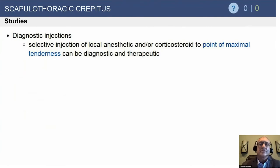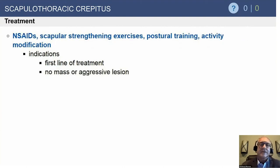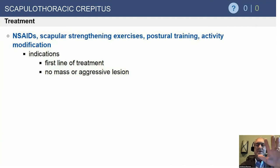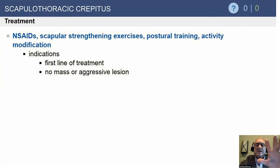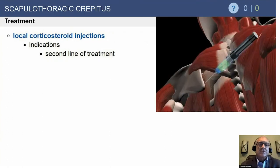Most of these are treated conservatively: anti-inflammatory medications, physical therapy, and corticosteroid injection in that area can be really valuable — both therapeutically and diagnostically, because if it gets rid of their pain, you know that's the source. With physical therapy, we work on scapular exercises, most importantly the lower trapezius and lower rhomboids to pull the scapula down. Many of these patients have the 'sick scapula' condition — their shoulders are rolled forward with a tight pec minor.